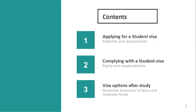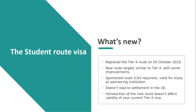First, we're going to go over the eligibility and requirements you need to meet in order to make a student visa application — for example if you need more time to complete your program or decide to study another degree in the UK. We'll discuss rights and responsibilities on the student visa, such as working in the UK. Then we'll talk about the Doctoral Extension Scheme and the Graduate Route — both options that allow you to remain in the UK to work after your studies. I won't be discussing the Skilled Worker route or Global Talent visa as there is another session covering those.